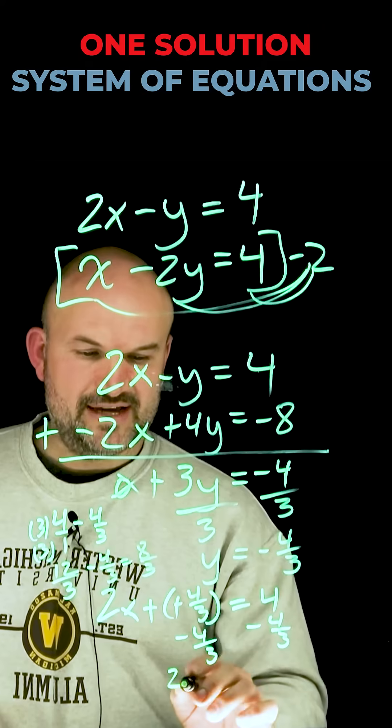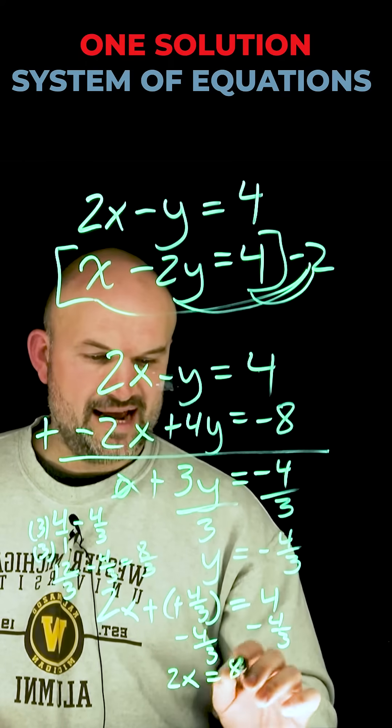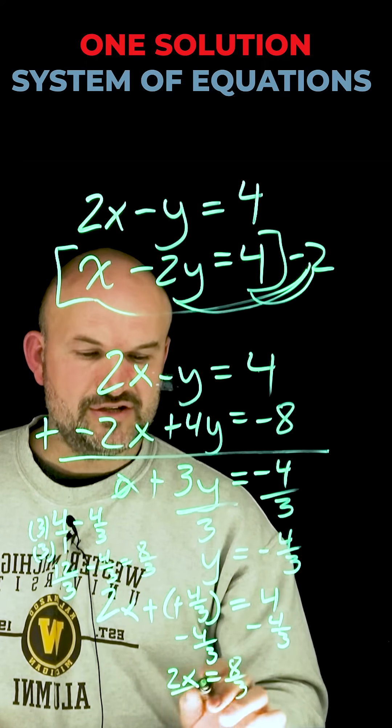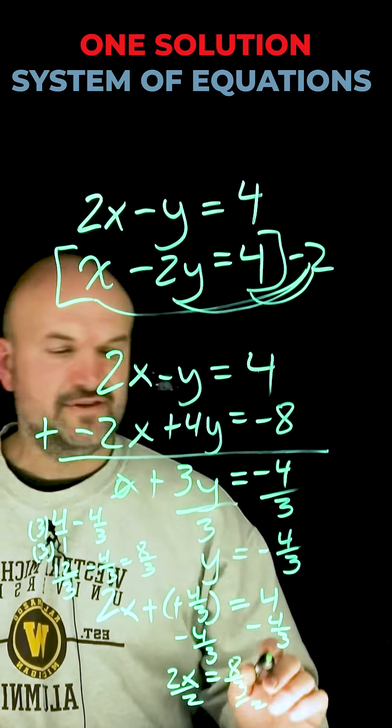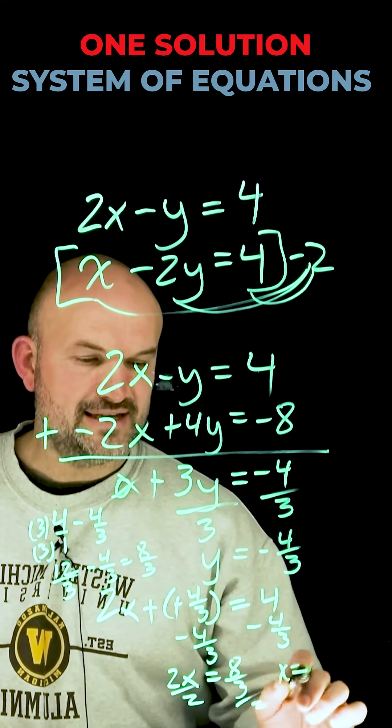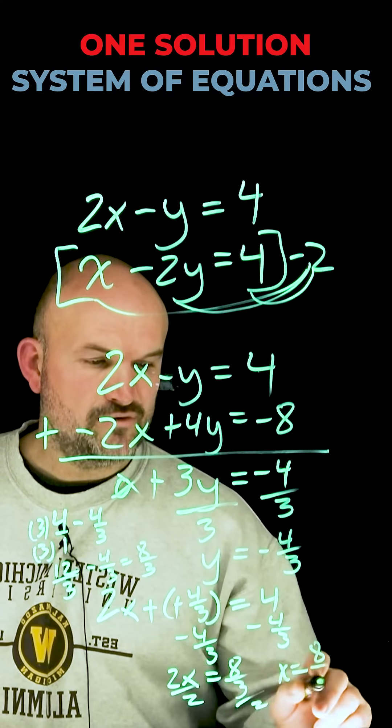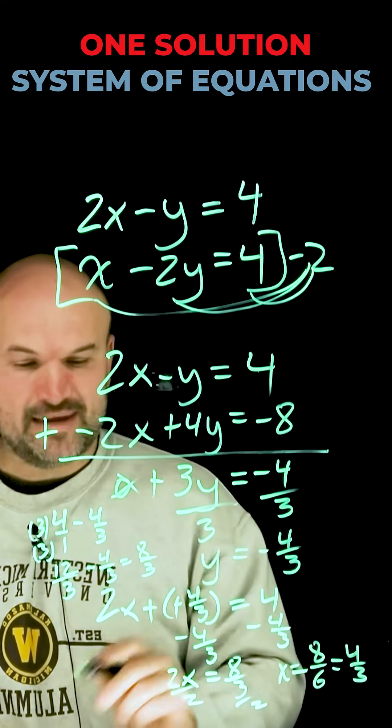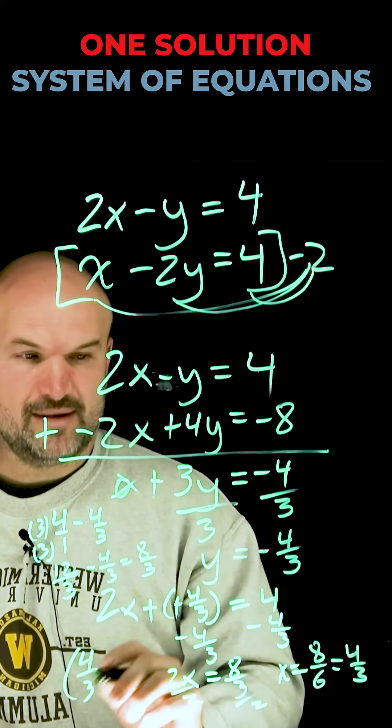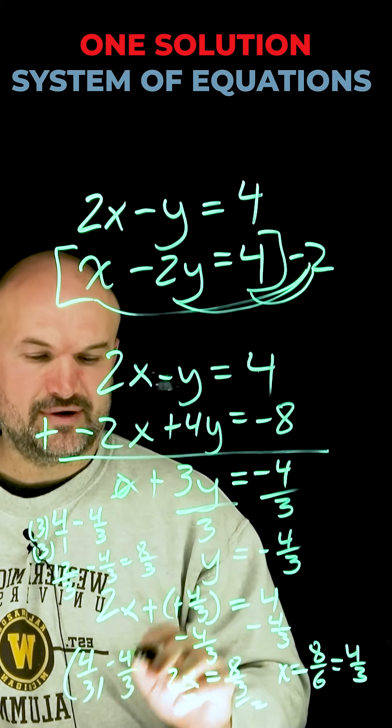So now I have 2x equals eight thirds. Then I'm going to divide by two on both sides. But remember, divided by two is the same thing as multiplying by one half. So I'm going to have x equals eight over six, which is going to reduce down to four thirds. So now my solution point is going to be the coordinate point four thirds, negative four thirds.